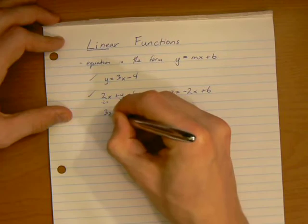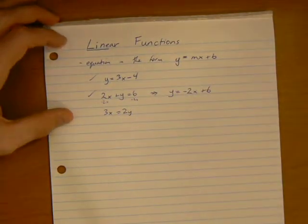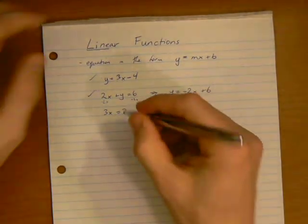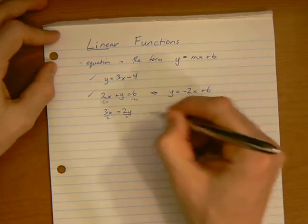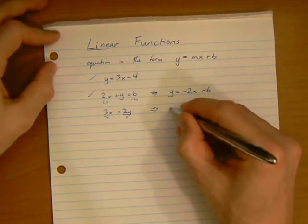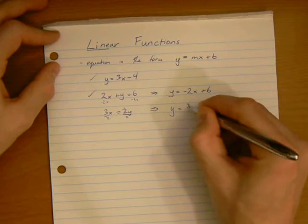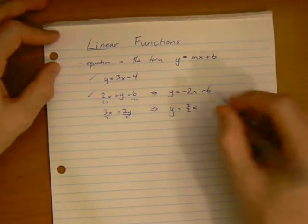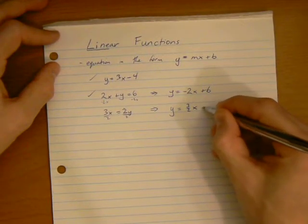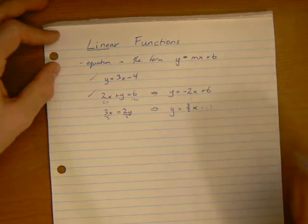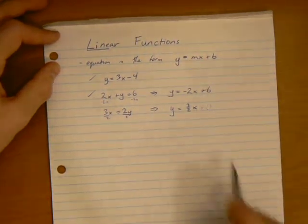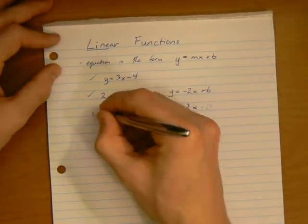How about 3x equal to 2y? Again, it's not in that format, but if we divide both sides by 2, those things divide out, and we get y is equal to 3 halves x. Here, our plus b is actually plus 0. It's not really there. Our b value is 0, so our y-intercept is 0. So, it is in that format.